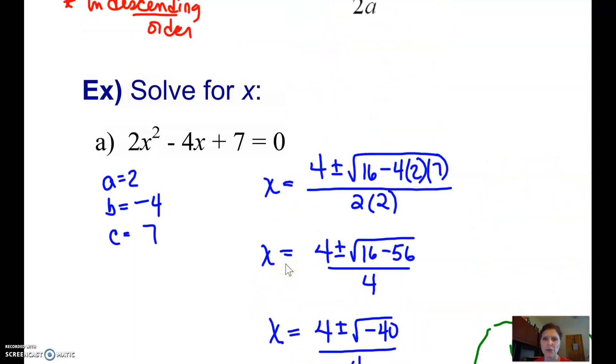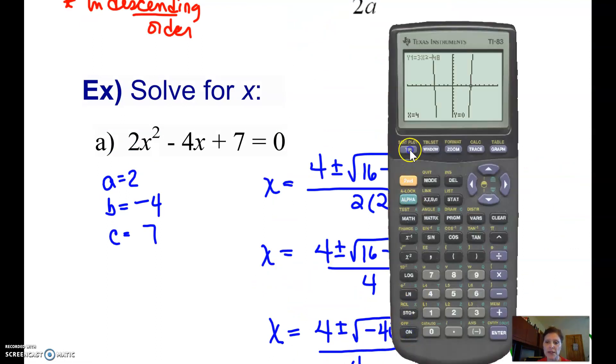I always like checking work. It's hard to check complex numbers as solutions, but one thing I could do is I could go to my calculator, and I can put in this new equation 2x squared minus 4x plus 7, and hit my graph button, and one thing I noticed is that that parabola is above the x-axis and moves upward. It will never cross the x-axis. That is telling me that my solutions at least should be complex. It's not a complete check, but it does help me believe that my answer is at least reasonable.